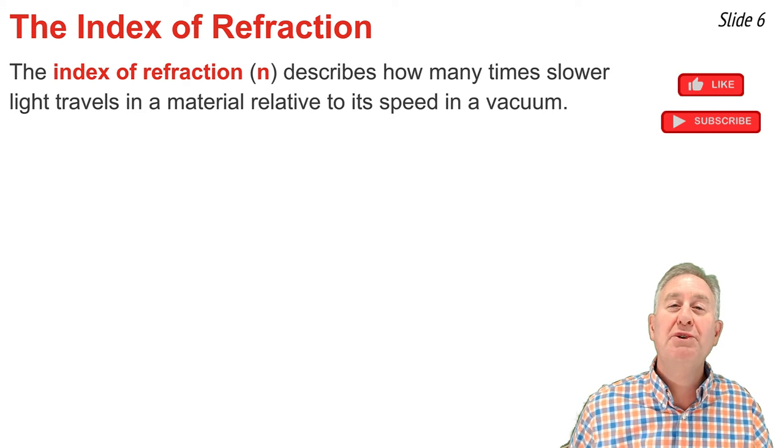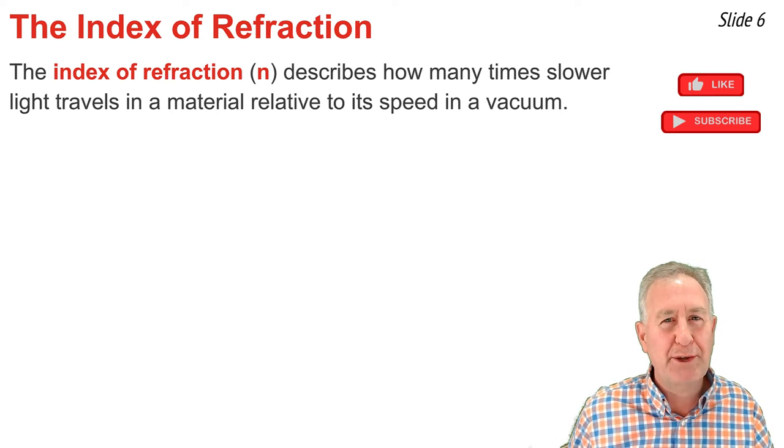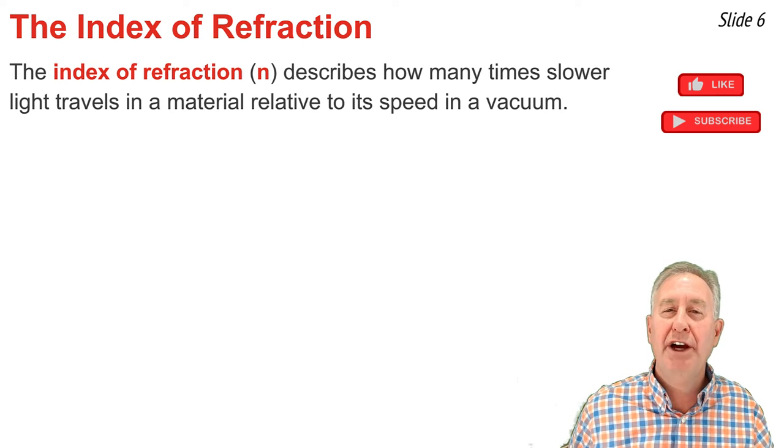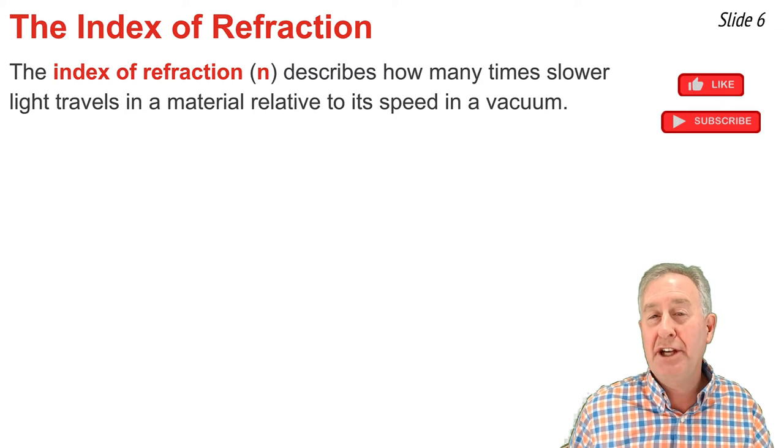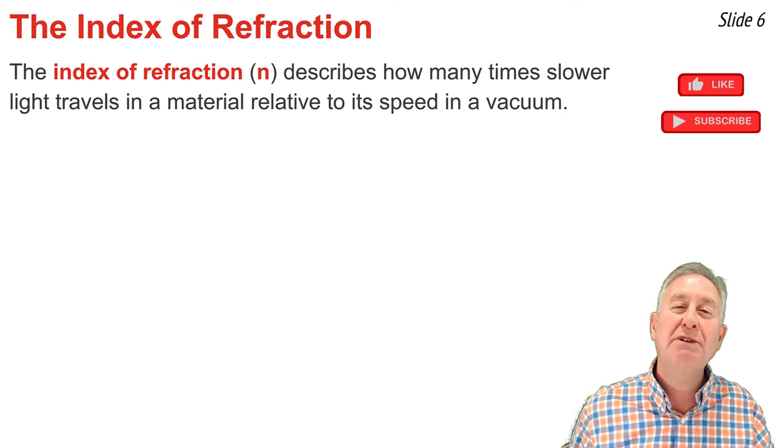Just as every material has its own unique optical density, every material also has its own unique index of refraction value. The index of refraction refers to how many times slower light will travel through that material than it does through a vacuum.